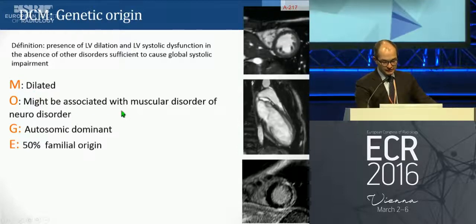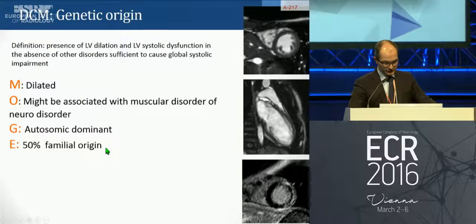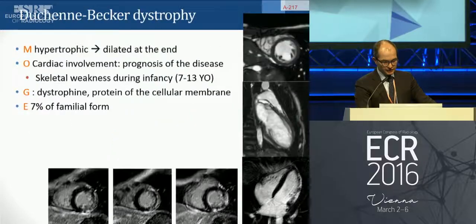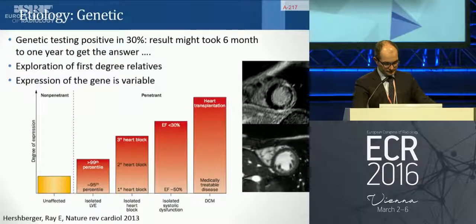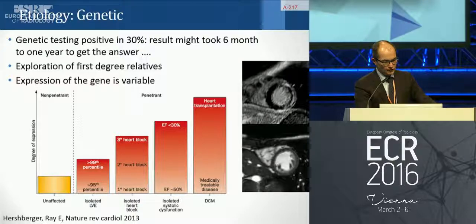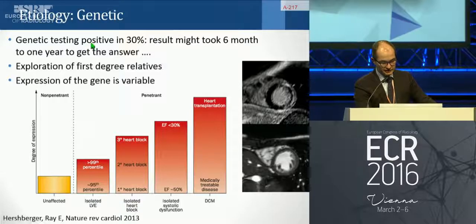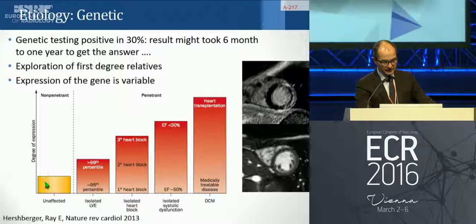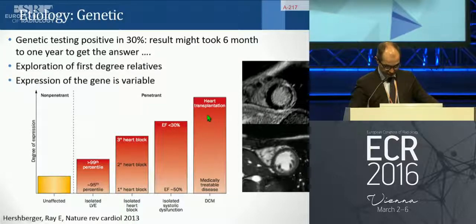The dilated phenotype may be associated with muscular or neurodisorder. It is autosomal dominant and 50% of familial origin. The difficult part of genetic origin is that genetic testing is positive in only 30% of cases, and results may take six months to one year. You must explore first-degree relatives of suspected patients, keeping in mind that gene expression is highly variable — some carriers are unaffected while others may require heart transplantation.